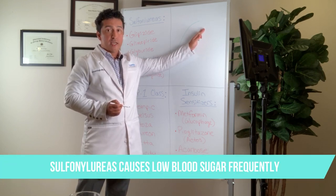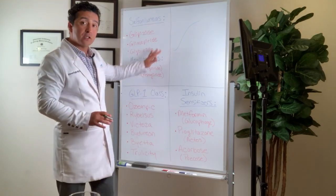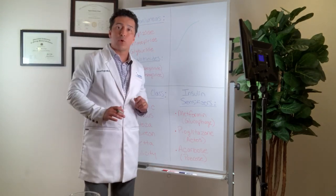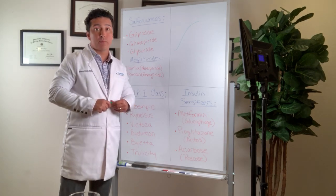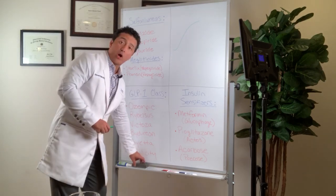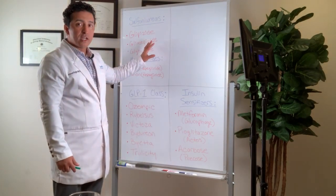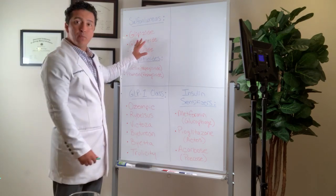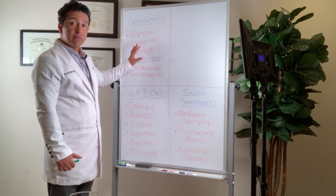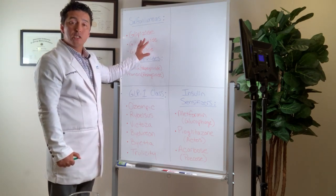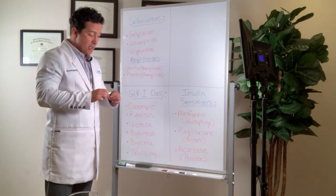The theory behind the sulfonylureas, the way they work, is that they actually make your body produce insulin. They go to your pancreas where beta cells are stimulated by sulfonylureas. The problem is you have to take it early in the morning before breakfast. If you don't have breakfast, that's a problem, because immediately after you take glipizide, for example, your insulin will go from here to here. This is not much different than just taking an insulin shot. If you take that pill, you have to eat.